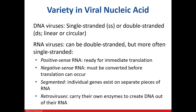DNA-based viruses can either be single or double-stranded. We can also see linear and circular double-stranded DNA. Typically, we find RNA as single-stranded in viruses. There are several types: positive-sense RNA can automatically be used to make proteins, while negative-sense RNA has to be converted to positive-sense before proteins can be synthesized. Sometimes, genes are found on their own piece of RNA, and these are considered segmented. Retroviruses are unique in that they have special enzymes that enable them to make DNA from RNA.